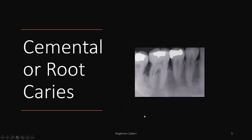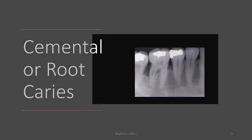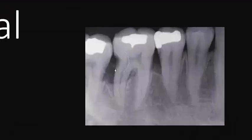Now, cemental or root caries — what happens there? Here we can see the continuity of the root is lost, and this is the carious lesion.